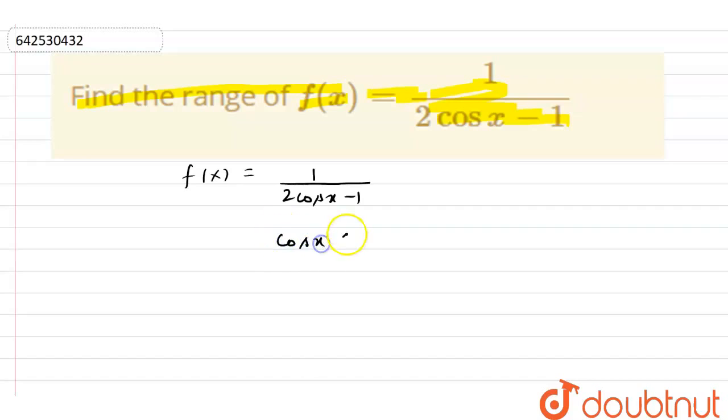We know that cos x varies between minus 1 to 1. If we multiply it by 2, then we'll have 2 cos x that is between minus 2 to plus 2.